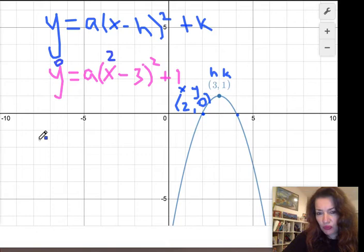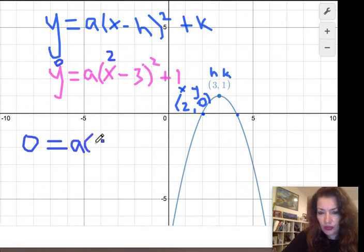And then we will simplify the whole equation. So plugging all those values in, we get that 0 equals a times 2 minus 3.